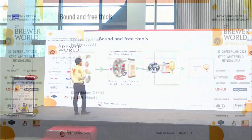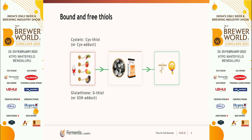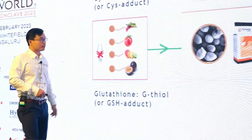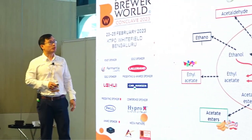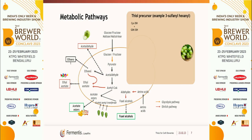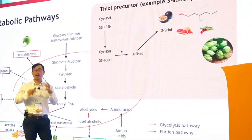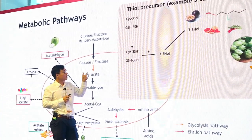Here is an easier explanation: the thiol is linked — bound — to other substances, usually glutathione or cysteine. Because of that binding, we cannot perceive it. But with yeast fermentation, it is released. That is the very important message. The thiol precursor is the cysteine-bound or glutathione-bound substance. We want to bring that inside the yeast and through certain enzymatic activity, it releases those passion fruit and citrusy thiols. The second step — S-acetylation to the acetate form — makes the aroma even stronger.